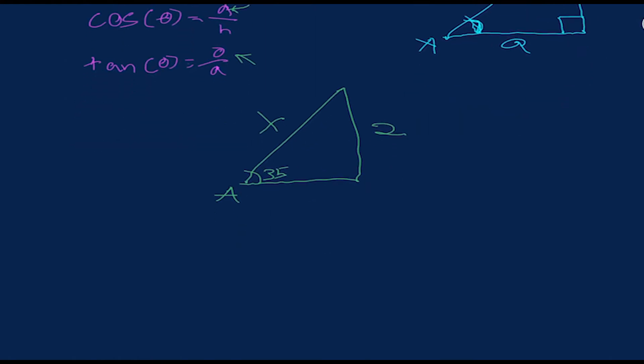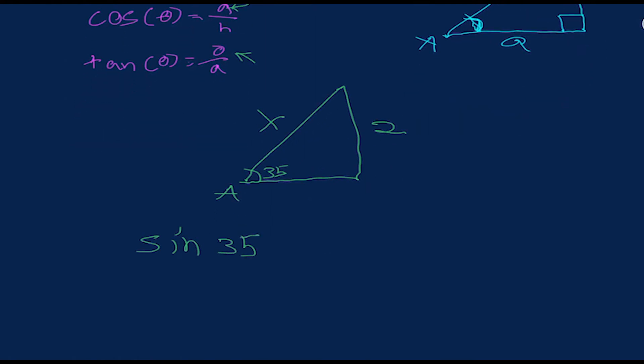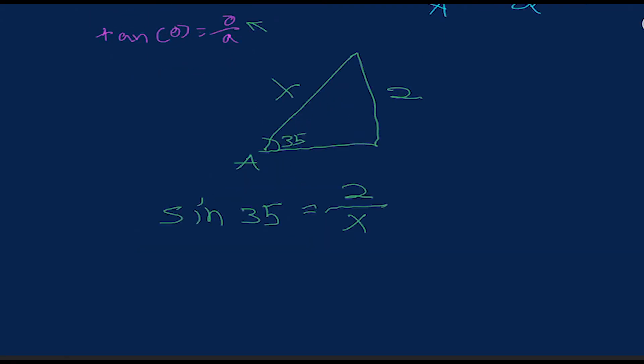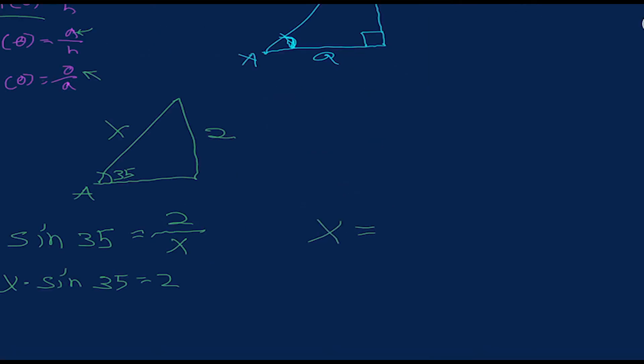So here, we have that sine of 35 equals our opposite side, which is 2, divided by our hypotenuse, which is x. Now we can do some simple algebra and multiply over the x, giving us x times sine of 35 equals 2. And then we want to divide over our sine of 35. We have x equals 2 divided by sine 35. And plugging that into our calculator, that equals approximately 3.5.